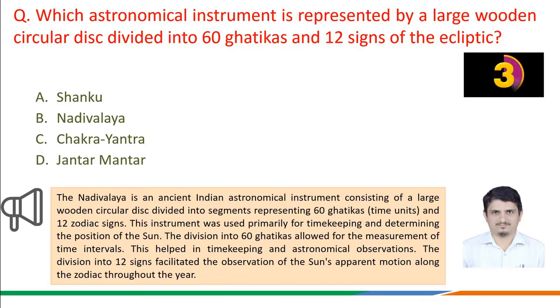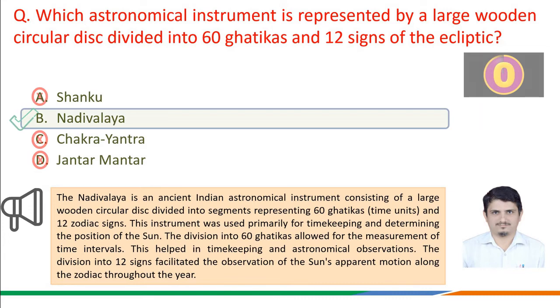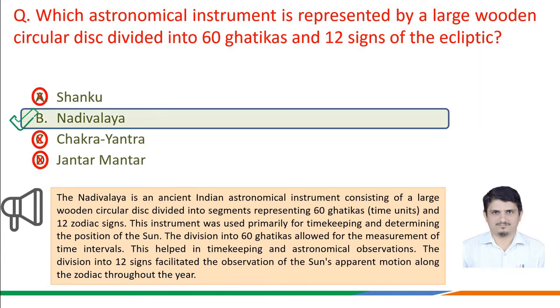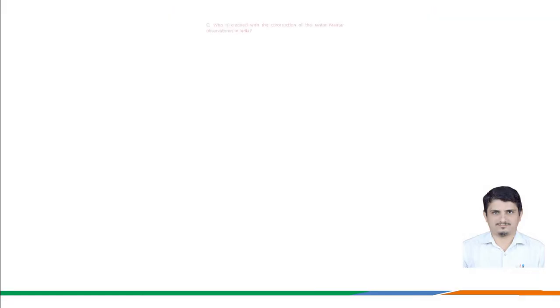Therefore, the correct answer is Nadiwalaya — an astronomical instrument represented by a large wooden circular disc divided into 60 Gattikas and 12 signs of the ecliptic. That is option b.